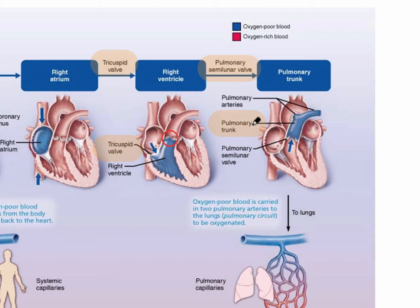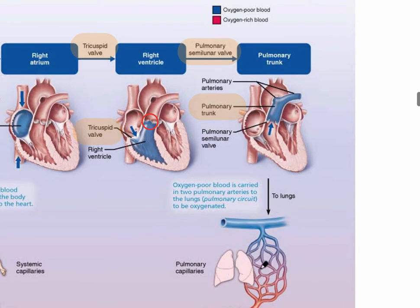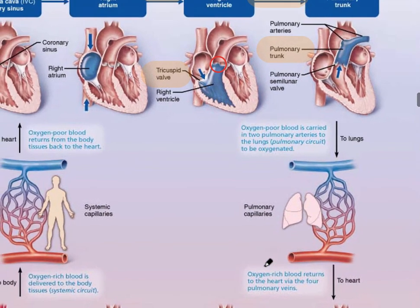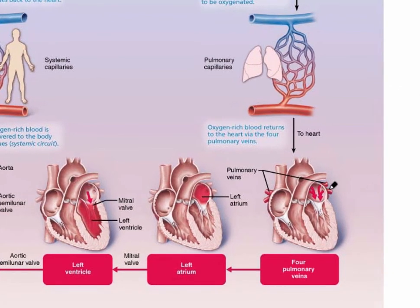Veins always deliver blood back towards the heart. Blood is now on its way to the lungs to pick up oxygen — that's the job of the right side of the heart. The left side receives fresh oxygenated blood into the left atrium through pulmonary veins found on both sides of the heart. The right atrium covers two of them, but on the posterior side we can see them — two on each side, four total — delivering freshly oxygenated blood returning from the lungs.